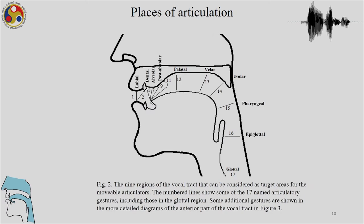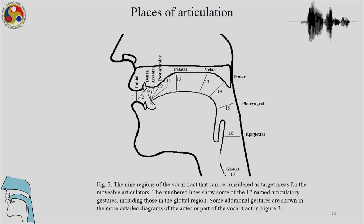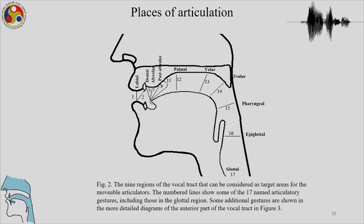In figure 2, we see what we call the places of articulation — the immovable structures, or more precisely in recent linguistics, the target areas. These are the target areas for the movable articulators. The 17 named articulatory gestures — where a movement towards a target is called a gesture — are seen in this diagram.